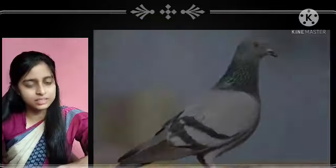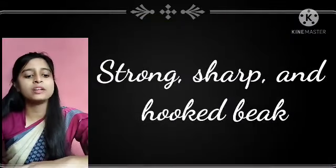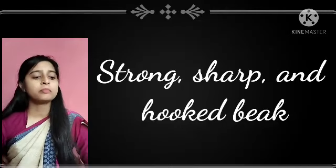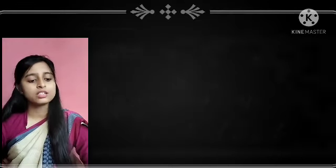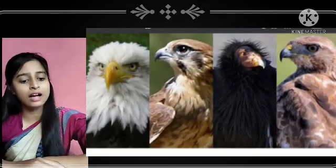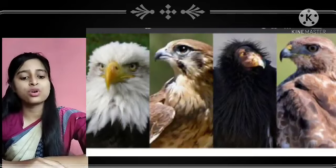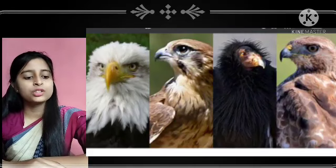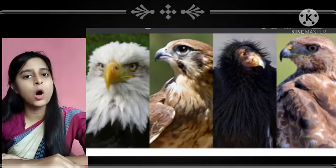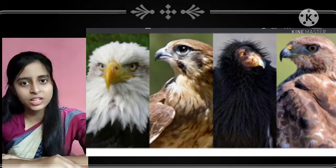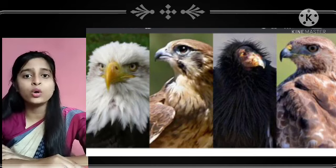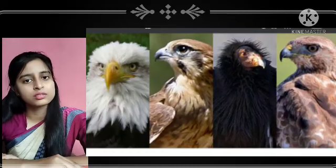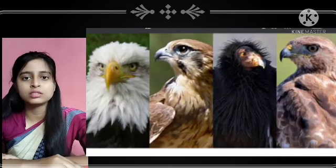Some birds have strong, sharp, and hooked beaks. Birds such as vulture, eagle, kite, and hawk have strong, sharp, and hooked beaks to tear and eat flesh. Vultures, eagles, hawks, and kites eat flesh — that is, meat from dead animals — and that is why they have hooked beaks.